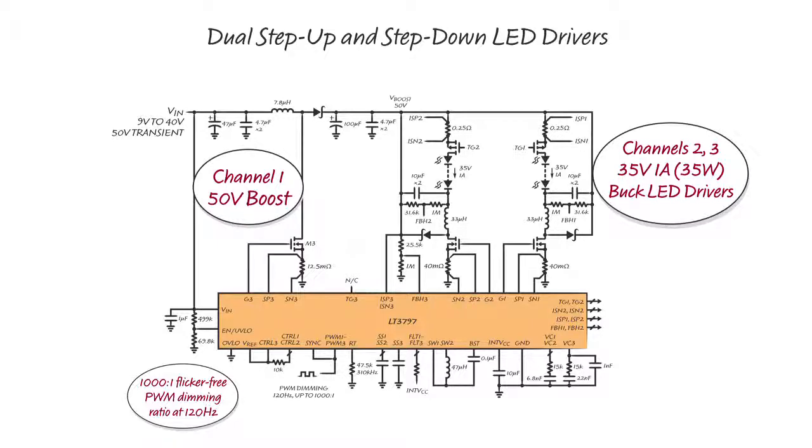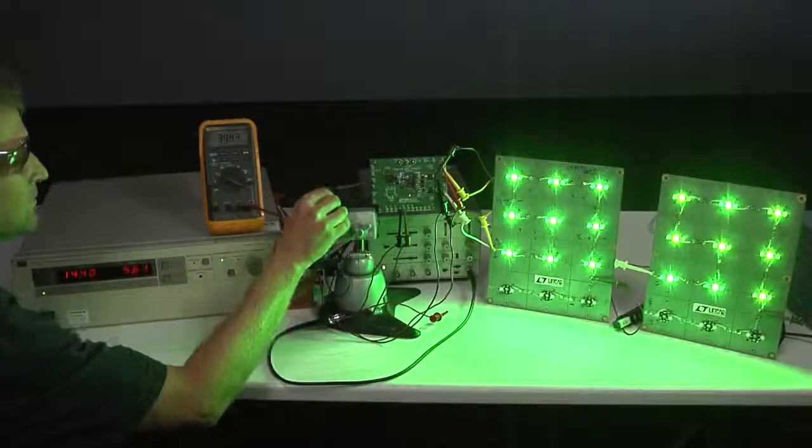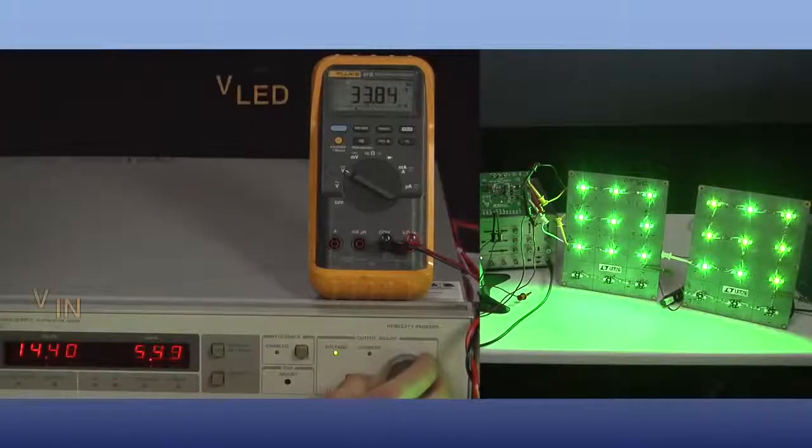This dual boost then buck-mode converter can drive two strings of up to 35 volts of LEDs at one amp from a 9-volt to 40-volt input and can PWM dim the strings up to 1000 to 1 dimming ratio. The converter regulates one amp through the LEDs when VIN is both below and above VLED.